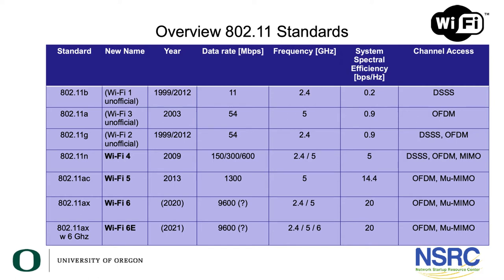Wi-Fi 4 corresponds to 802.11n, Wi-Fi 5 to ac, and Wi-Fi 6 to ax. The earlier ones didn't get official names, but unofficially we call them Wi-Fi 1, 2, and 3. Then it got complicated again because recently 6 GHz was opened as an additional ISM frequency — at least in some countries, with others still on the way. Since 6 GHz wasn't included in Wi-Fi 6, we now have Wi-Fi 6E, meaning Wi-Fi 6 with 6 GHz added.